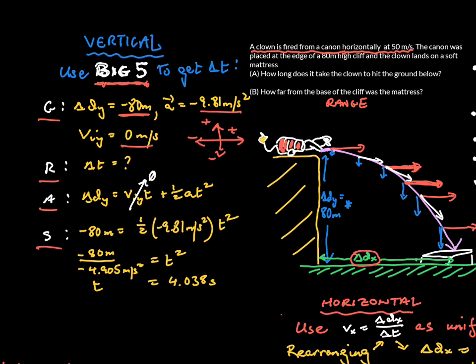The key point here is the initial velocity in the Y direction. This poor unfortunate clown was shot horizontally, so for a horizontally launched projectile, V_i_y is zero because the initial velocity was all in the X direction.